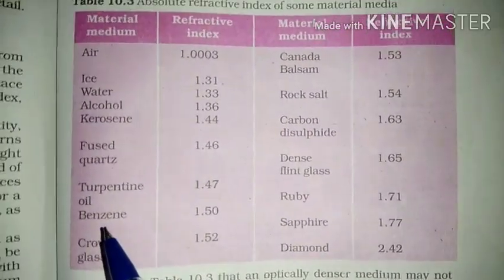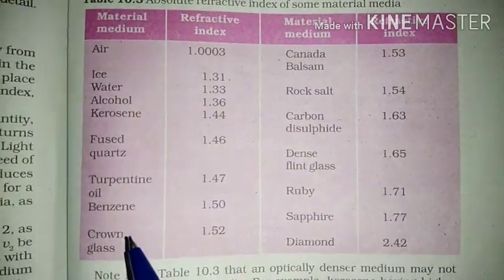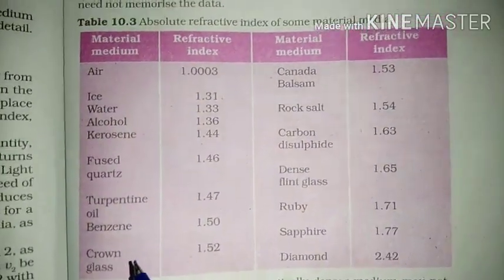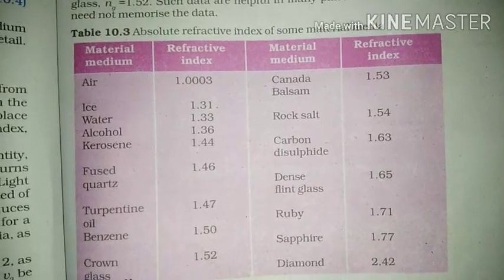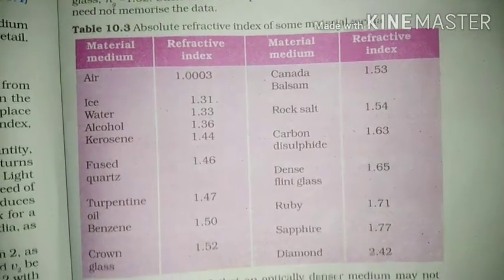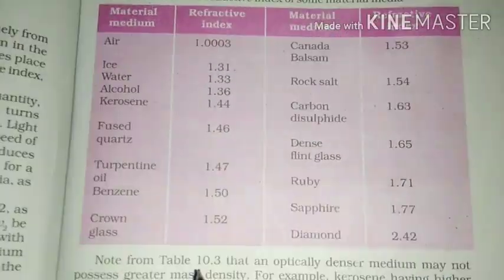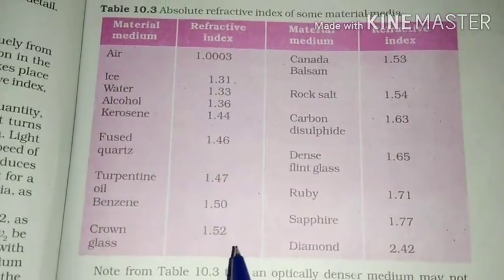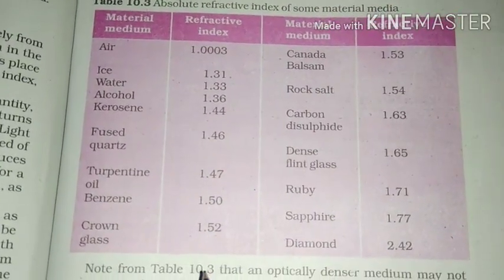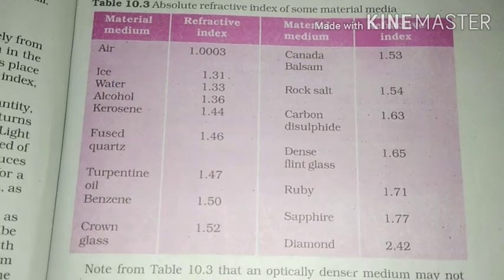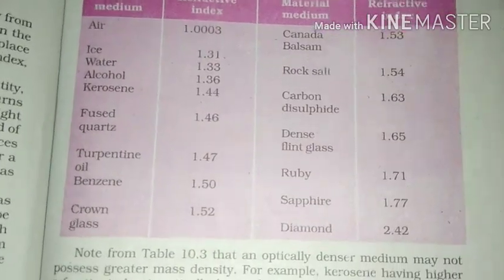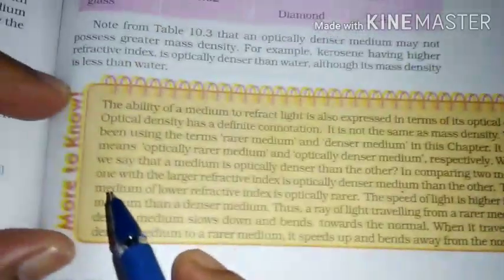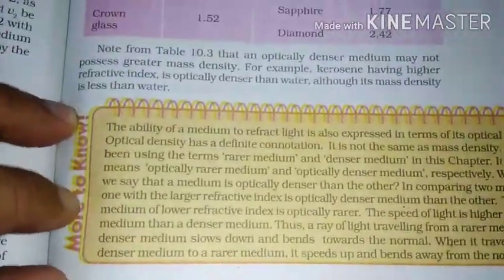From this data we see that different material media have different refractive indices. In class 8 we already read that higher is the optical density, lower is the speed of light, and lower the optical density, higher is the speed of light. There is also an article 'more to know' on this topic.